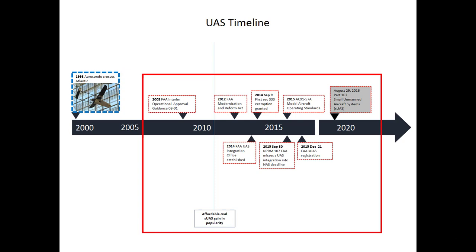We will be discussing many of these events in later units. One thing to keep in mind when reviewing these events is when affordable civil unmanned aircraft systems became available to the public. No one has come up with an exact date, but somewhere around 2010, small consumer model aircraft became affordable and popular with the public. Shortly after that, Congress directed the FAA to integrate small unmanned aircraft into the National Airspace System.